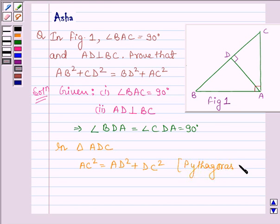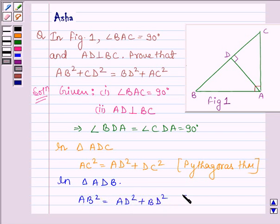And also in triangle ADB we have AB square is equal to AD square plus BD square and this is again by Pythagoras theorem, which says in a right triangle, the square of the hypotenuse is equal to the sum of the square of other two sides.